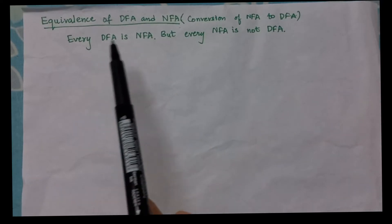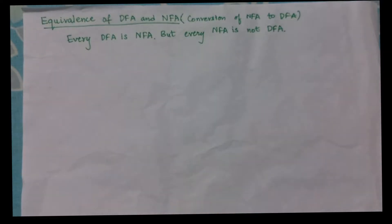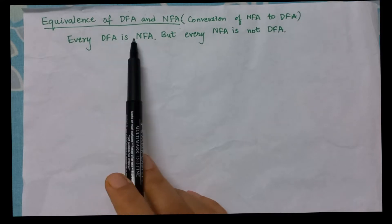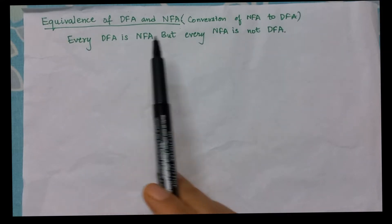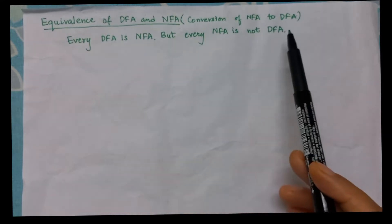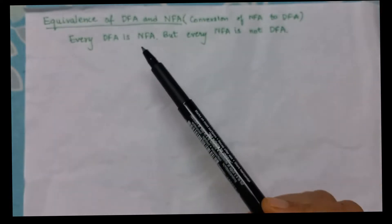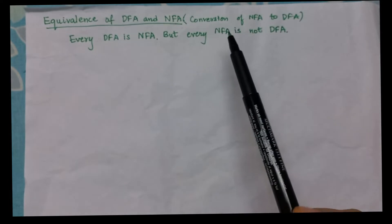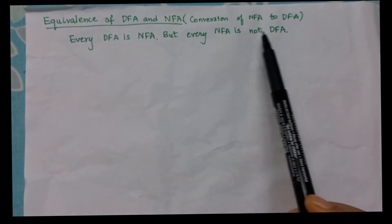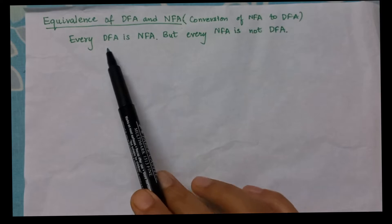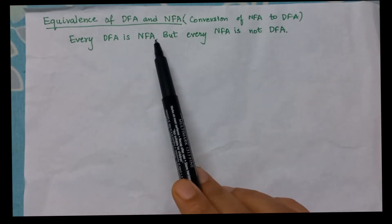Now let us consider equivalence of DFA and NFA — that is, how do I convert an NFA to DFA. One important thing to note here is every DFA is an NFA, but every NFA is not a DFA. Even if an NFA has one exact result, it can still be an NFA. So every NFA is not a DFA, but every DFA is definitely an NFA.